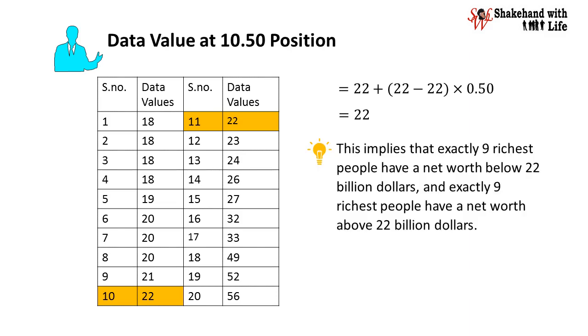This implies that exactly 9 richest people have a net worth below 22 billion dollars and exactly 9 richest people have a net worth above 22 billion dollars.